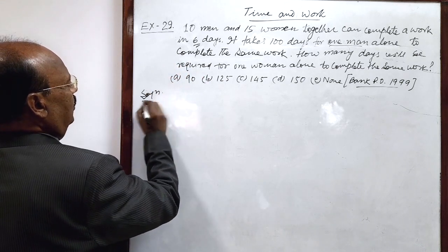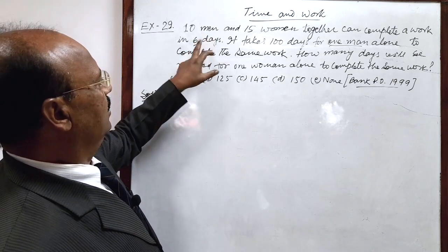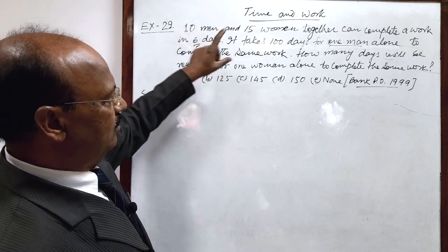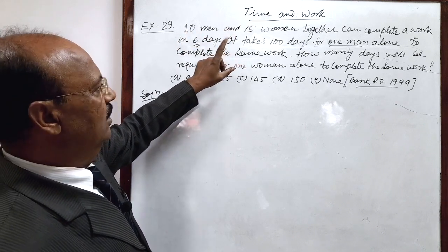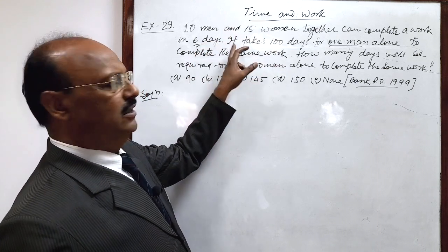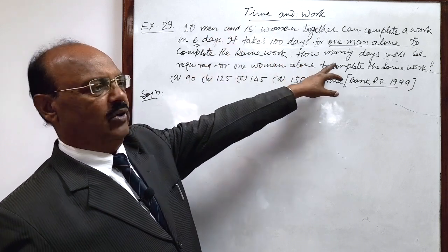Here first of all we will find out the amount of work done by 10 men in 6 days. Because if this amount will be subtracted from work done is 1, then we will get amount of work done by 15 women in 6 days. And on the basis of this data we'll be able to find out number of days required for one woman to complete the same job.